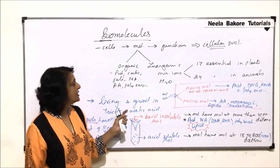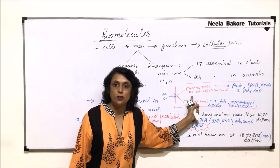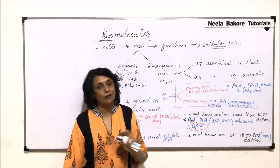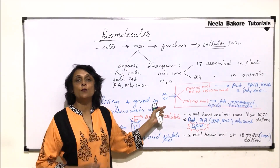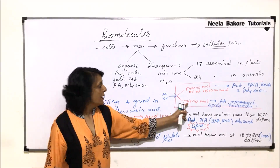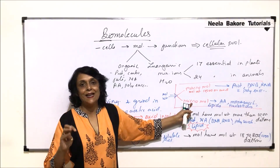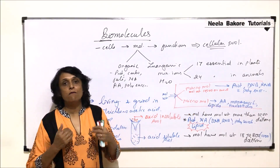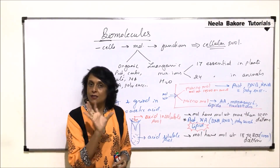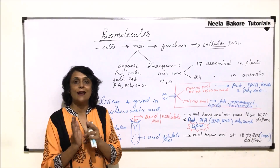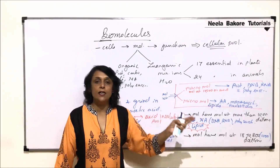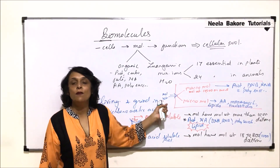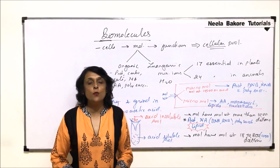When we classify biomolecules, we study carbohydrates, proteins, fats, nucleic acids, and minerals. Rather than separating micromolecules and macromolecules of each type across different sections, we will study all forms of each substance together. For example, for carbohydrates we will cover monosaccharides, disaccharides, oligosaccharides, and then continue with polysaccharides all together. In the next segment, we will start with the actual biomolecules, beginning with carbohydrates.